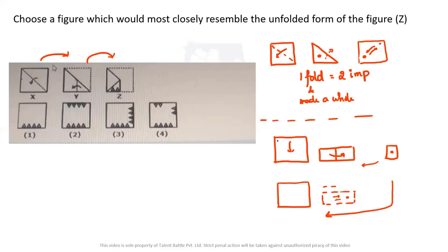When unfolded, the other hole should be on top of this, so it should be over here — they are symmetrical to each other. Now there's one more fold to unfold to the top. When unfolded to the top, the two holes are over here already, and when unfolded to the top again, there are two more holes on top which should be symmetric and on top of the previous holes. So I can conclude: one fold and one hole gives two impressions; two folds and one hole gives four impressions.